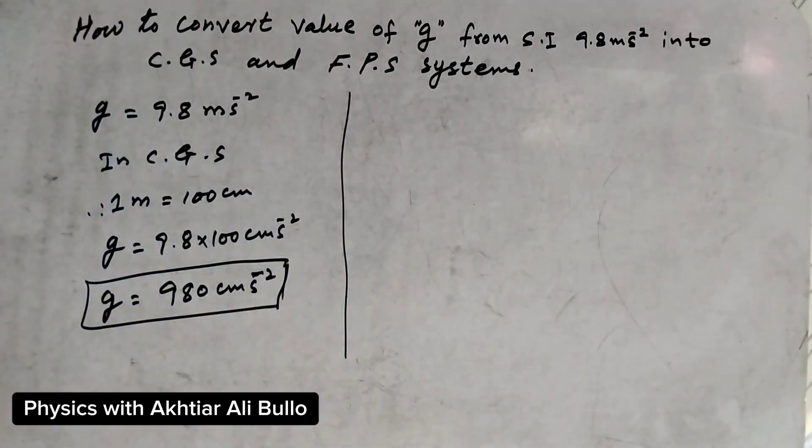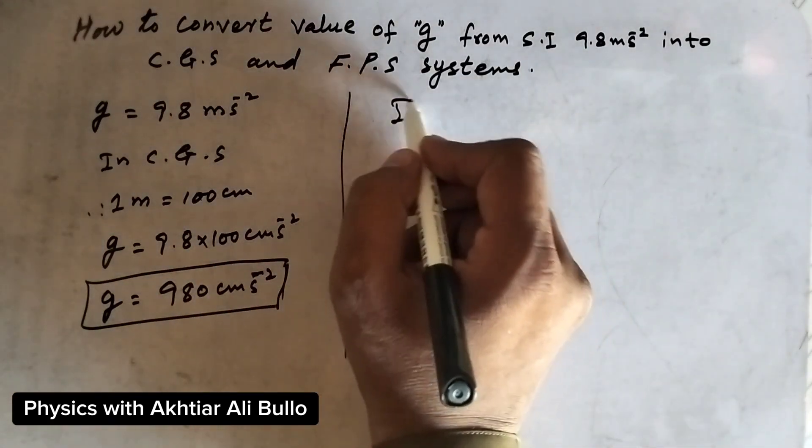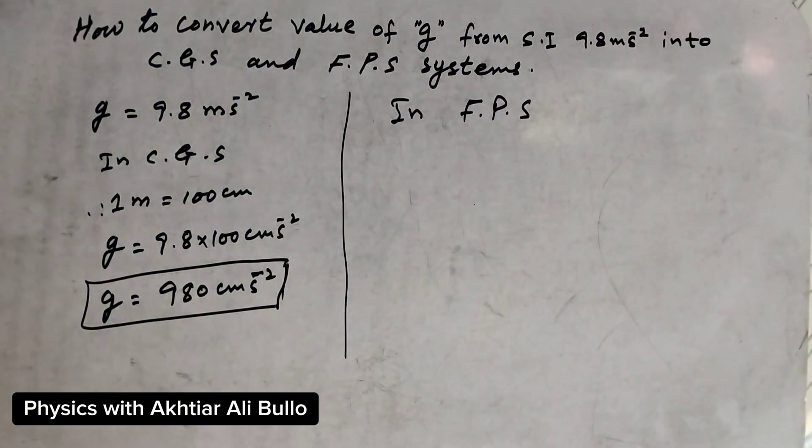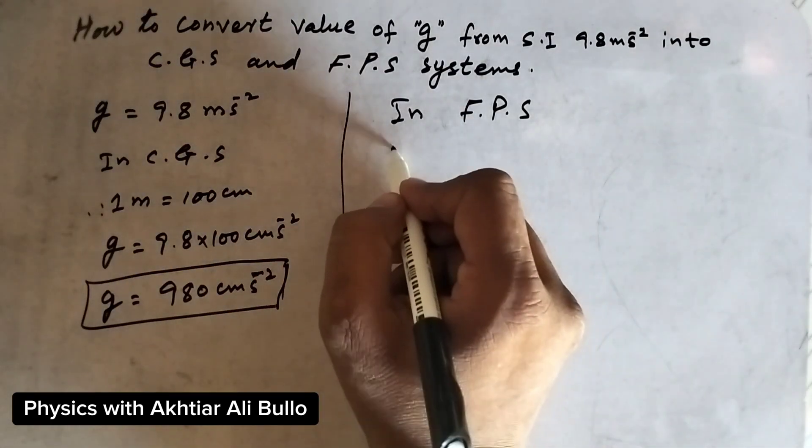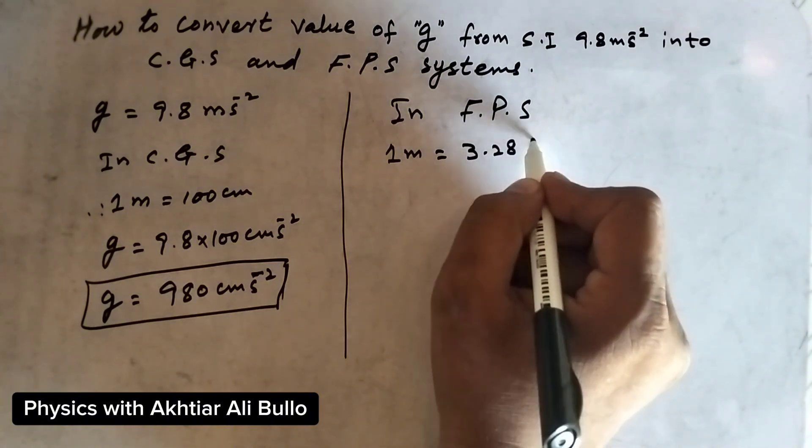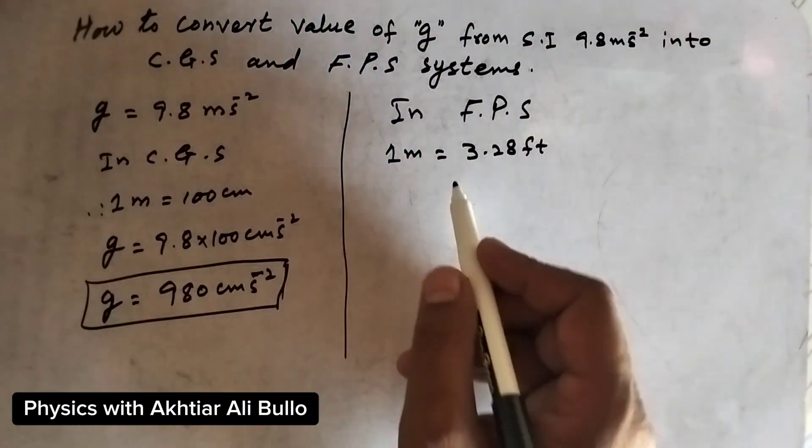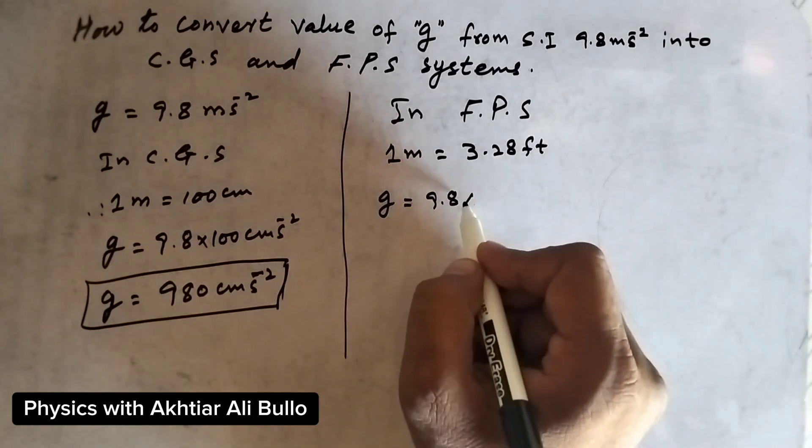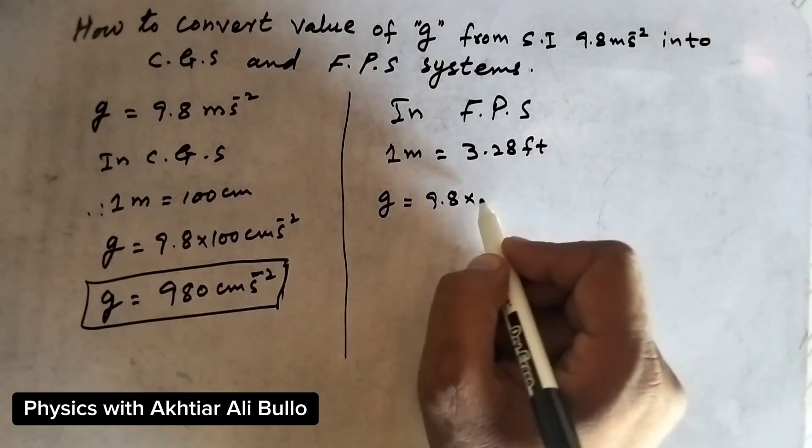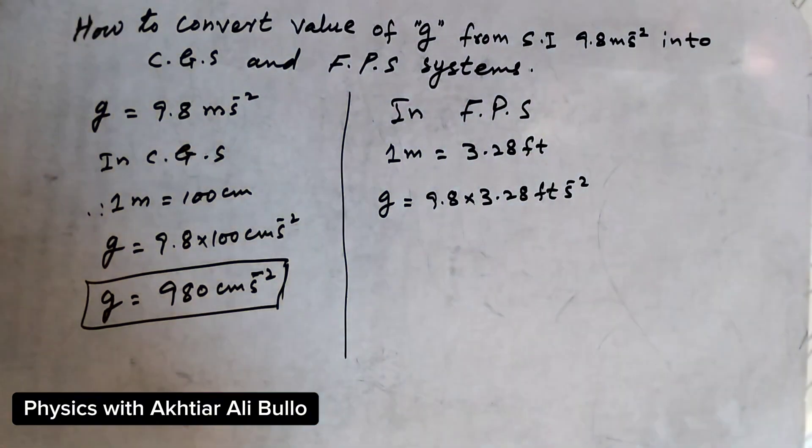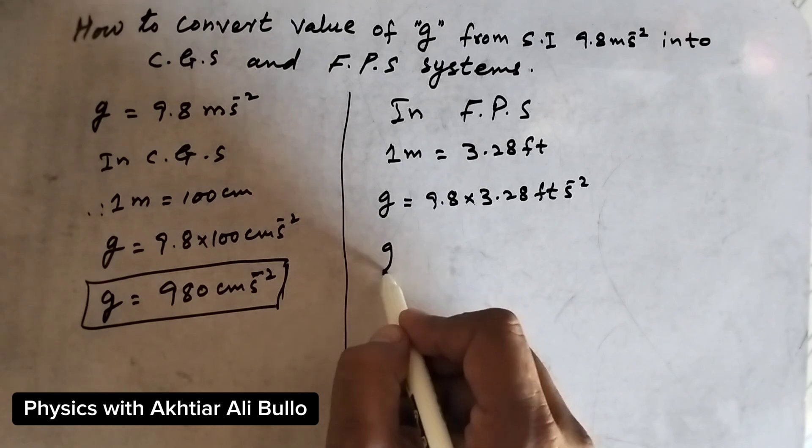Now for the FPS system: 1 meter equals 3.28 feet. In the FPS system, the value of g will be 9.8 times 3.28 feet per second squared, with seconds remaining the same.